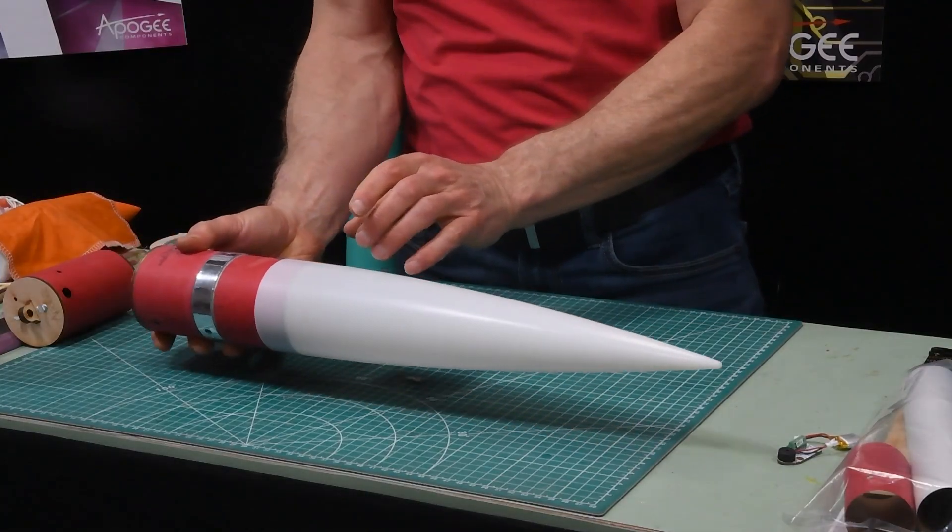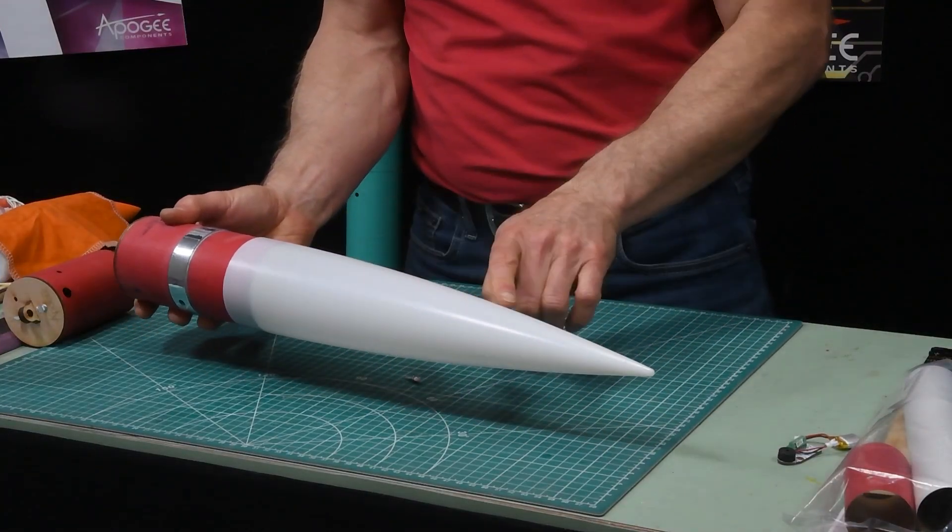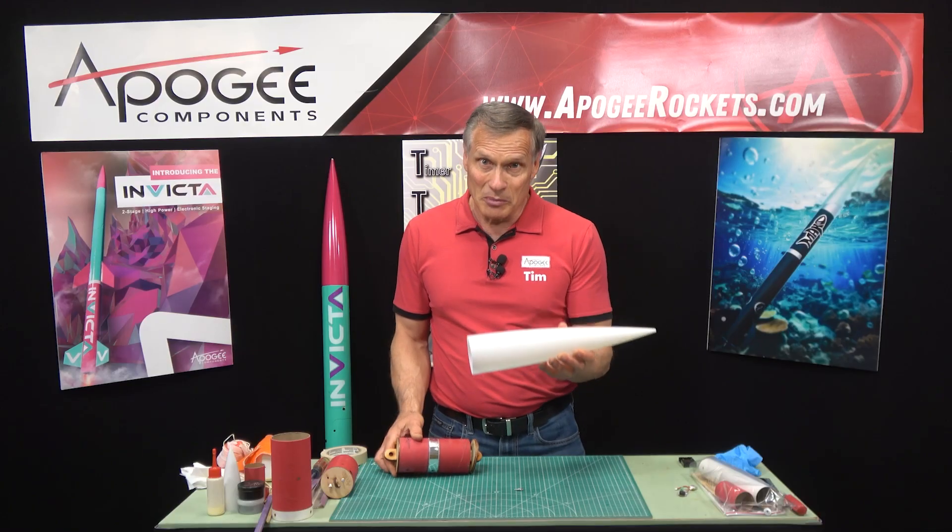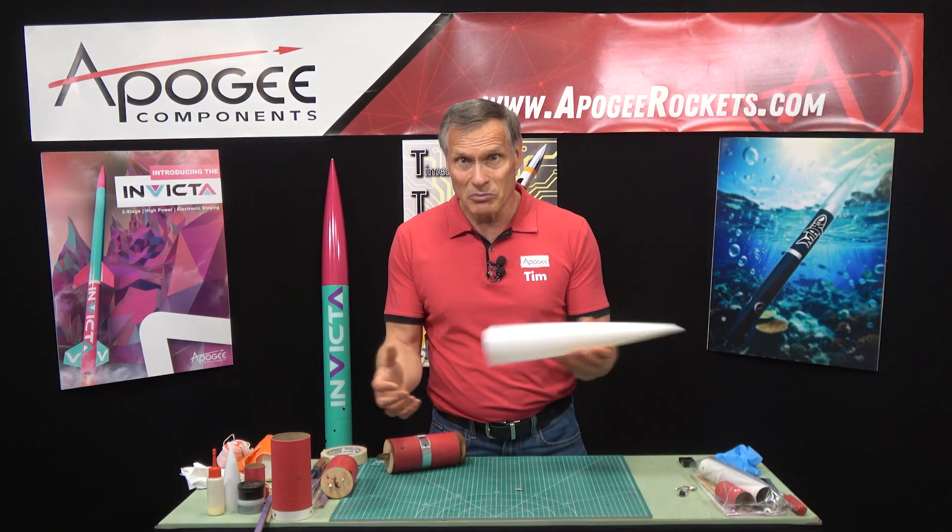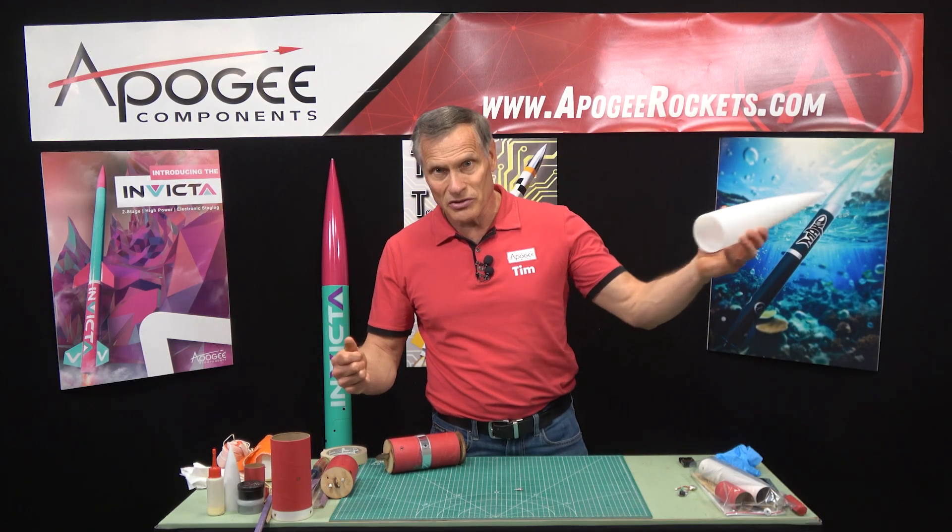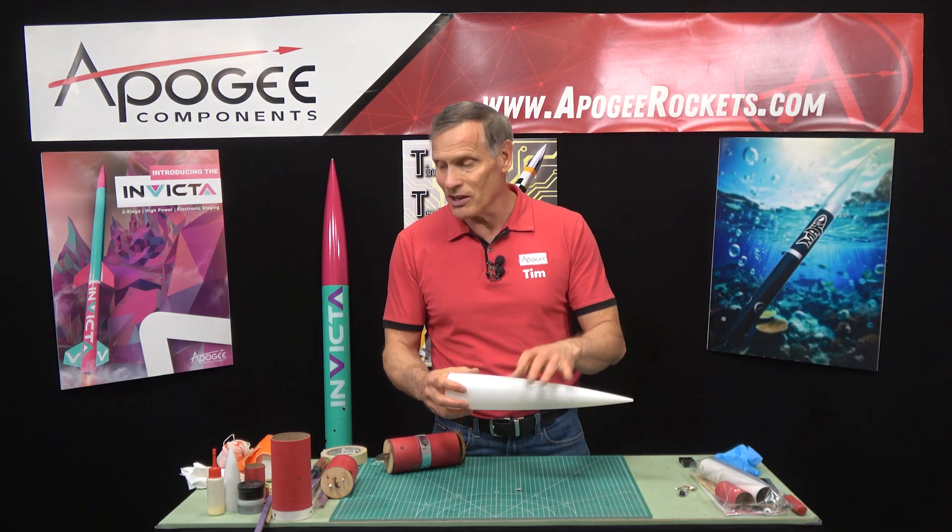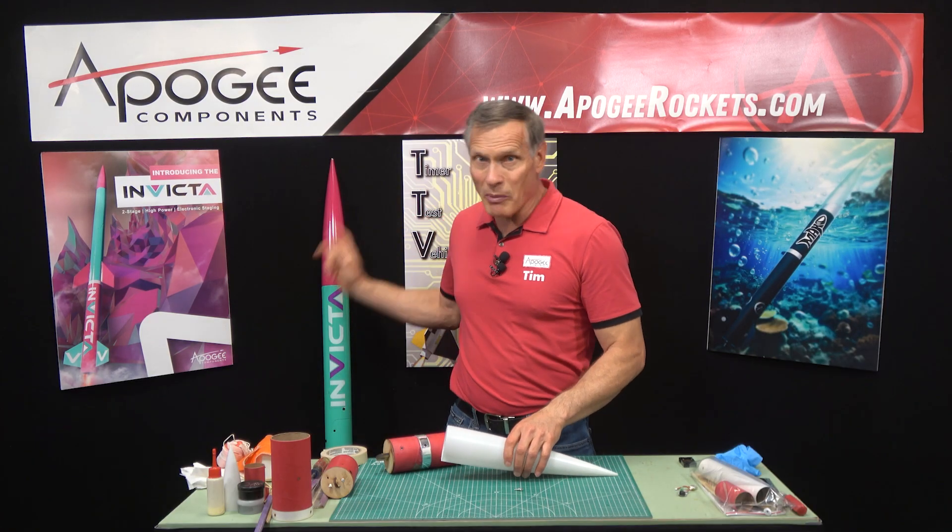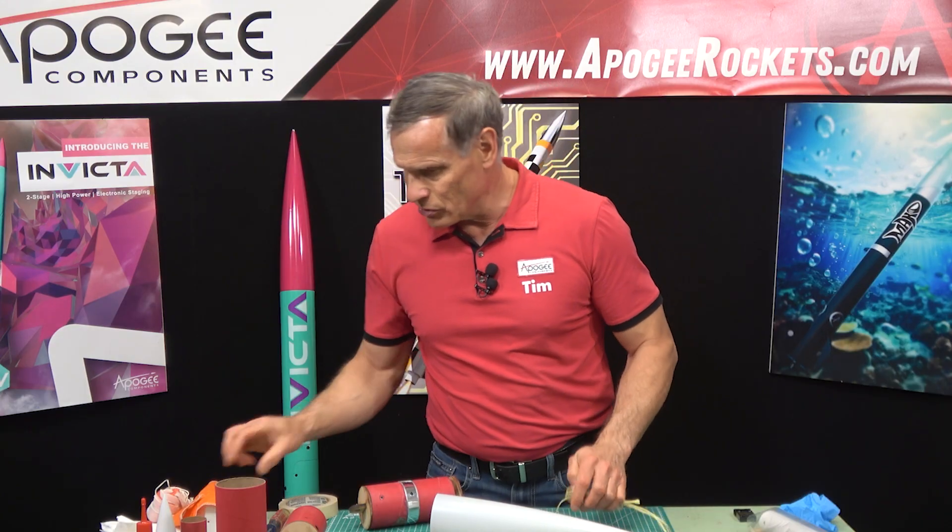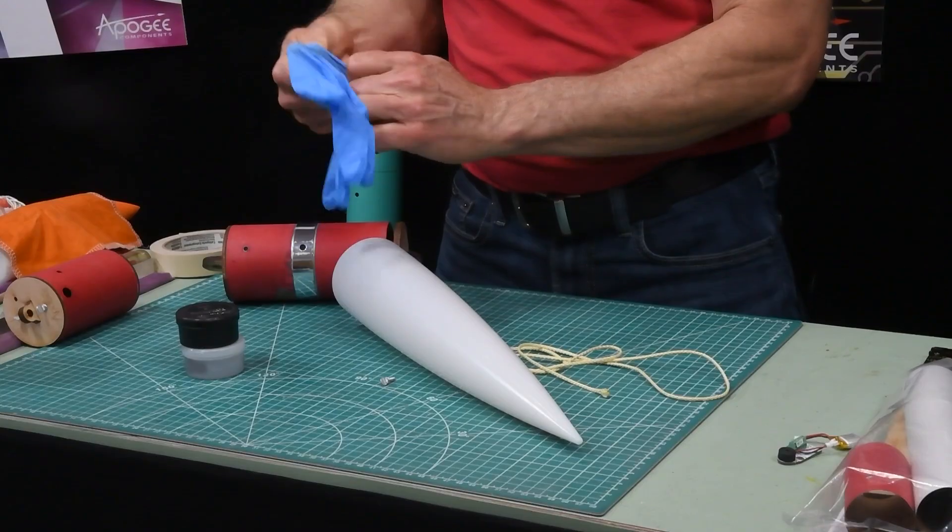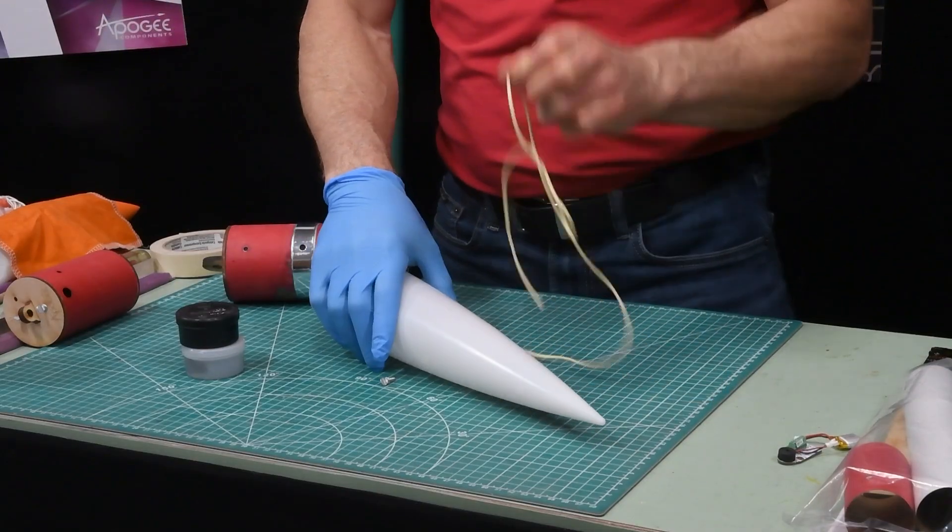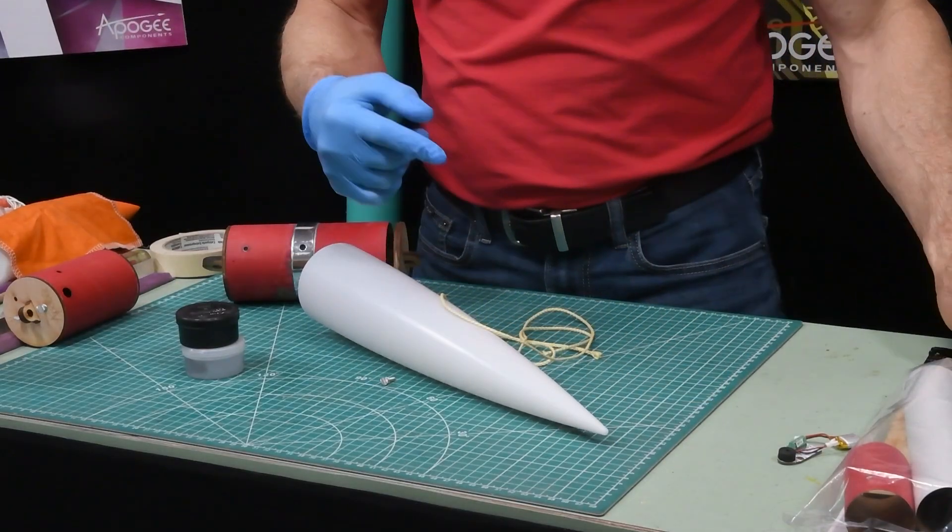As you can see this does fit in and then there's still a lot of room left over for the parachute inside. But the problem is now we don't have a way to keep the nose cone attached so when the ejection charge goes off and pulls the parachute out this is going to go separate so we need to tie this to the body of the rocket. So we're gonna take our shock cord and I'll show you what my plan is here.